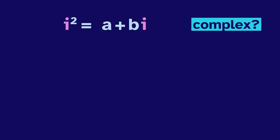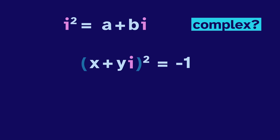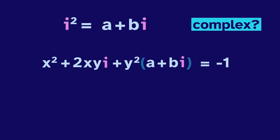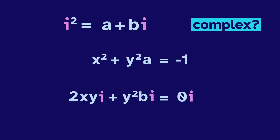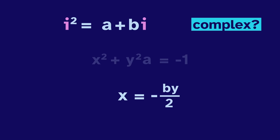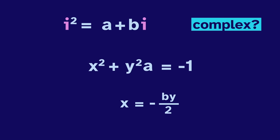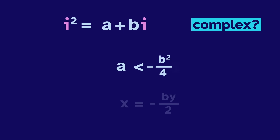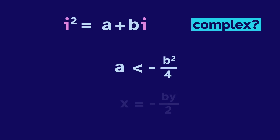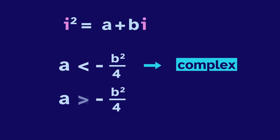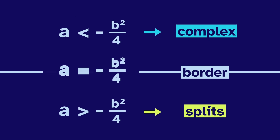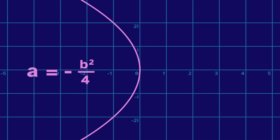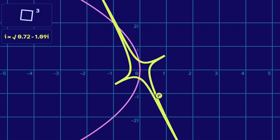Let's figure it out. Given a definition of i, is it complex? We'll check to see if there's something that squares to negative 1. We distribute, then replace i squared with the definition. We separate the real and imaginary parts of this equation. In the imaginary part, we find that x equals negative b over 2. Substituting into the real equation, we find that the right-hand side must be less than 0. Therefore, a must be less than negative one quarter of b squared. If this is true, the system is complex. But if a is greater than negative one quarter of b squared, the system is the splits. The border is where these two sides are equal — this equation makes a sideways parabola. The complex systems are to the left of the sideways parabola, and the splits are to the right.